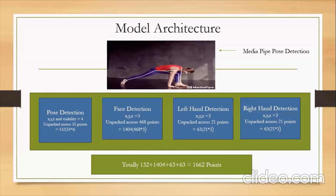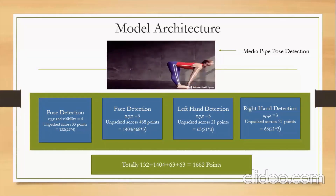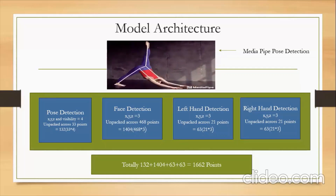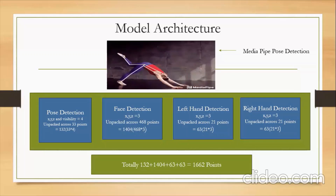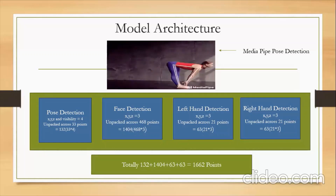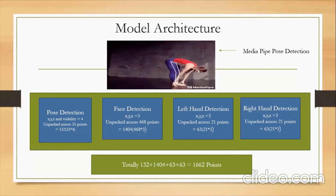Given a video of a human, these detections generate a lot of points which we'll be using in subsequent models. The output is split into pose detection, face detection, left hand detection, and right hand detection. Pose detection gives you four values per keypoint: X, Y, Z, and visibility — visibility indicating whether the point is visible or not. The pose model has 33 keypoints, so 33 multiplied by 4 gives 132 values per frame.